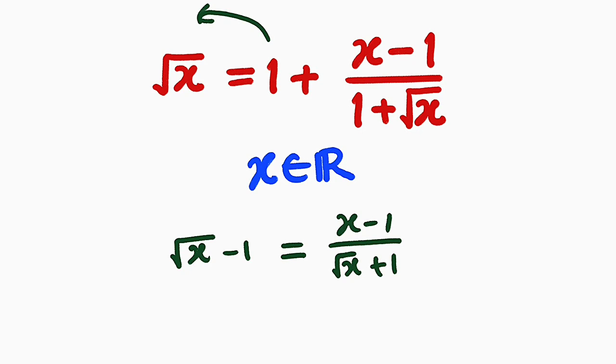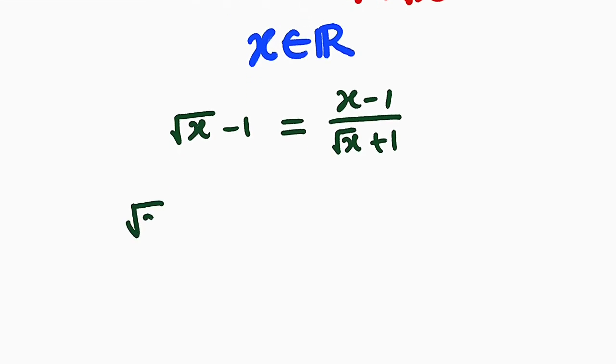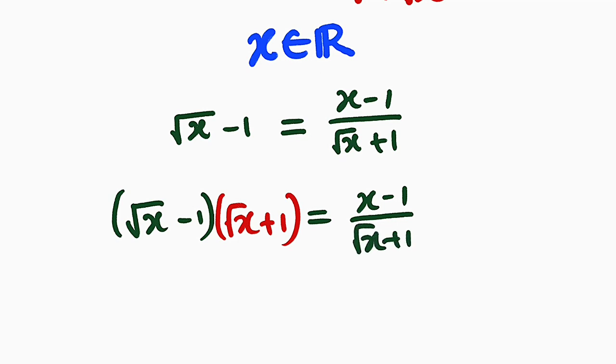Then to clear the fraction we can multiply both sides by this denominator, which is square root of x plus 1. So we have square root of x minus 1 to the left, we're going to multiply it by square root of x plus 1. This will be equal to x minus 1 divided by square root of x plus 1. We are equally going to multiply the right hand side by square root of x plus 1. By doing this, it will cancel.